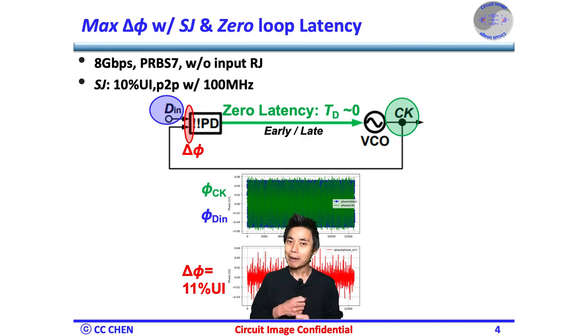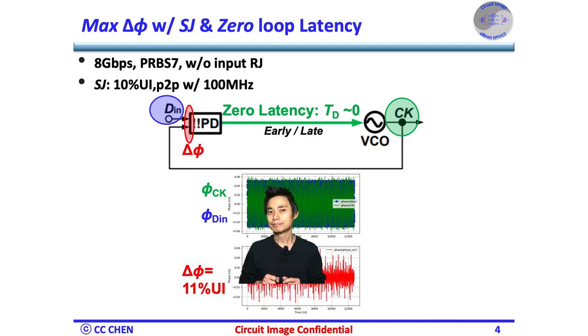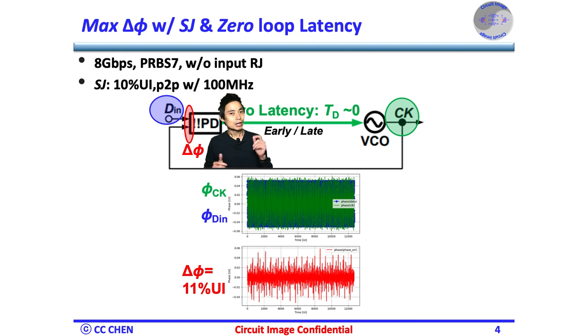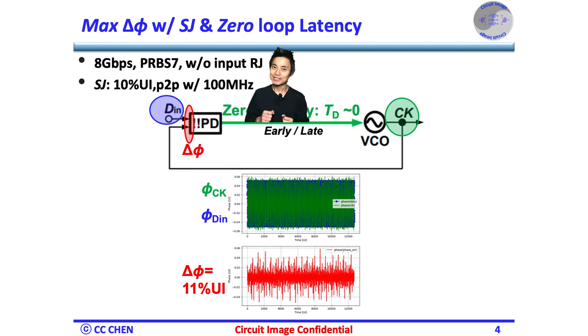In any type of CDR, the loop latency would be a big issue. Therefore, we could just apply our Bang-Bang loop dynamic model as a placeholder for the latency simulation for all kinds of CDR. In this example, we put an 8 Gbps PRBS7 signal source without any random jitter RJ,